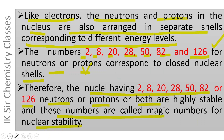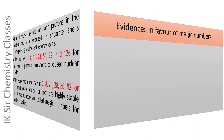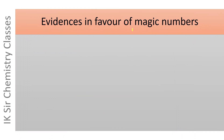Evidences in favor of magic numbers. If the number of neutrons or protons or both in a nucleus is 2, 8, 20, 28, 50, 82, or 126, the nucleus is highly stable and these numbers are called magic numbers for nuclear stability.